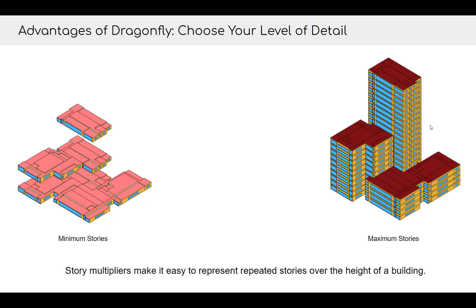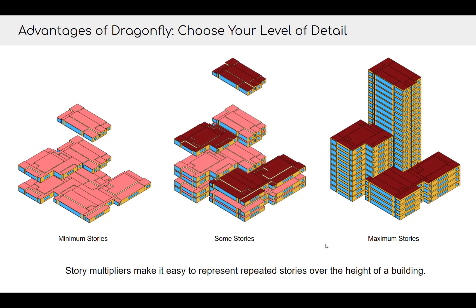You can essentially choose your level of detail because of these story multiplier objects. A fully-detailed model may be needed for production-level work where you need to examine individual solar gains in rooms, but a simplified model with multipliers is probably good enough for early-stage design decisions — comparing one HVAC template to another. Dramatically, a fully-detailed model might take two to three hours to simulate, while a simplified multiplier model takes 20 minutes, and an even simpler one just 10 minutes.